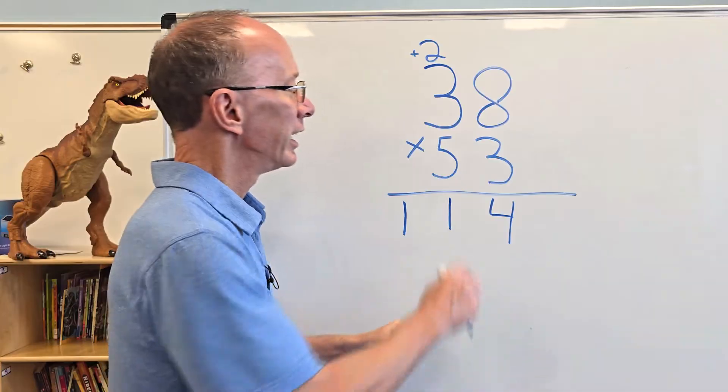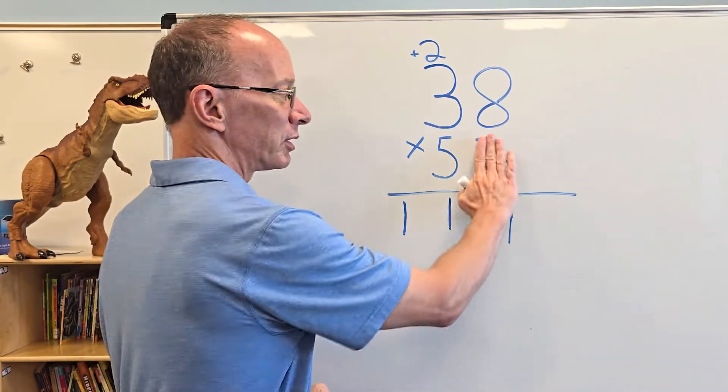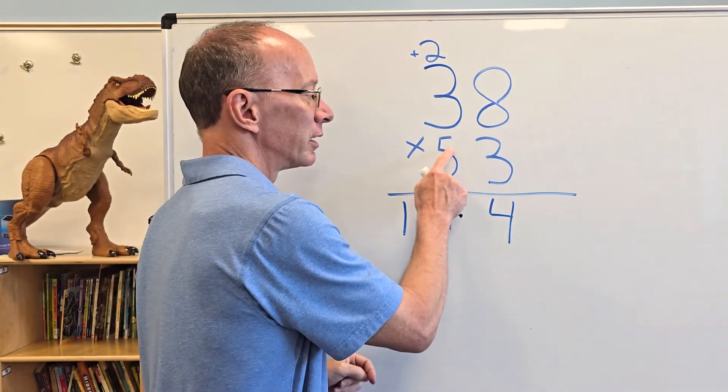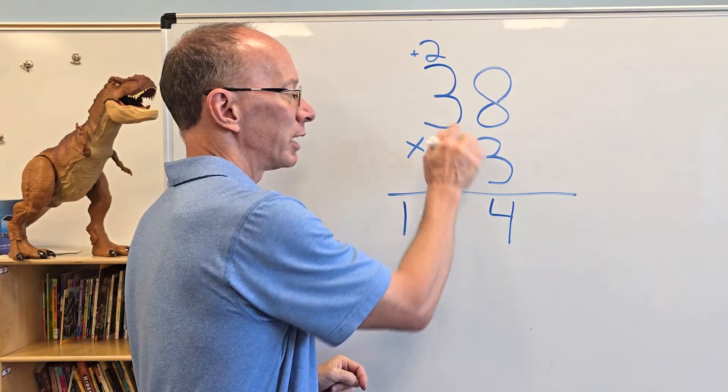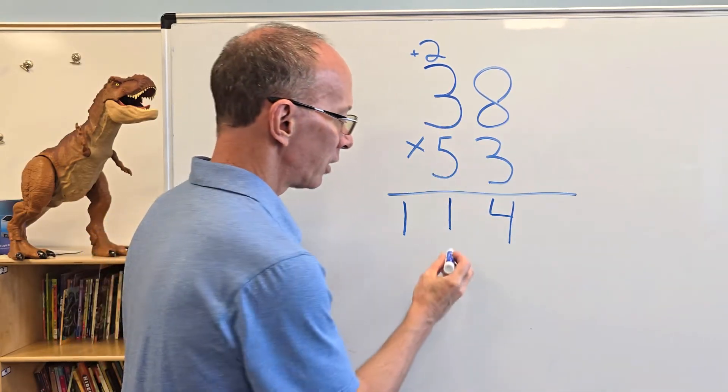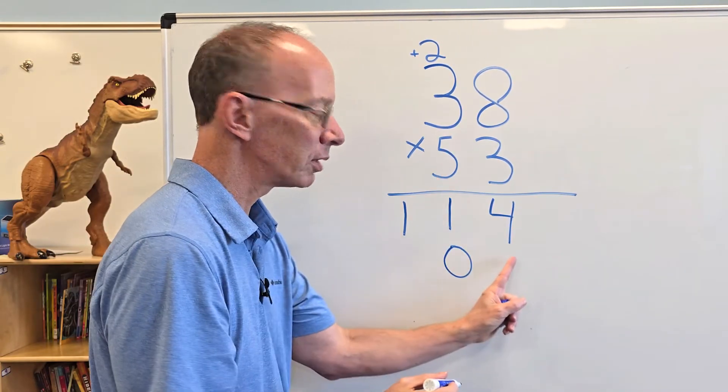Now I'm going to work with this 5. You can totally ignore that 3 right now. I'm going to take 5 times 8, and I'm going to do 5 times 3. So 5 times 8 equals 40. So I put the 0 right here. Make sure you put the 0 right underneath that 5, don't put it over here. Put it right there.